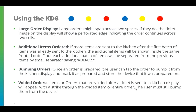To reiterate bumping: once an order is prepared, the user can tap the order to bump it from the kitchen display, marking it as prepared on the store device. For voided orders, items or orders voided after a ticket is sent to the kitchen display will appear with a strikethrough on the voided item or entire order. The user must still bump them from the device to remove them from the screen.